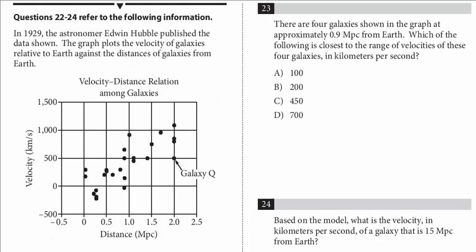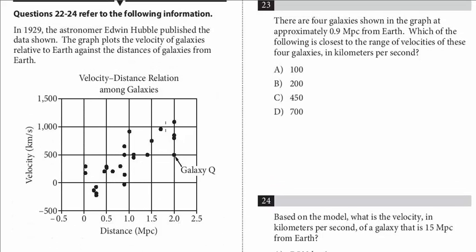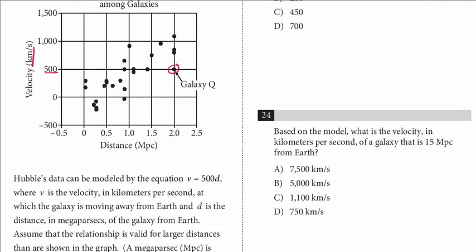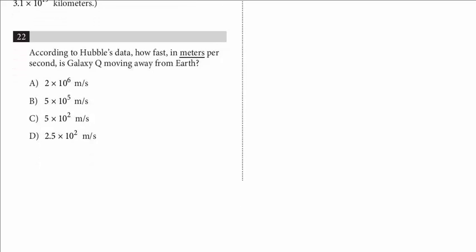Let's first find galaxy Q. Galaxy Q, we even got it labeled right here, and that's exactly at 500, but remember, pay attention to the units, that's 500 kilometers per second. So, we know that this is going to be 500 kilometers per second, and we have to convert that into meters, and they don't give you a conversion.